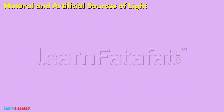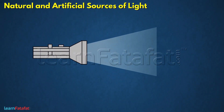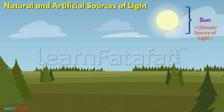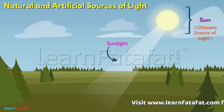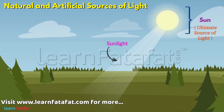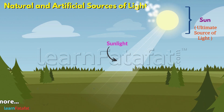Natural and artificial sources of light. Anything that produces light is called a source of light. The ultimate source of light is the sun. Light coming from the sun is called sunlight. There are many other sources of light. On the basis of origin, these sources can be categorized as natural sources and artificial sources.